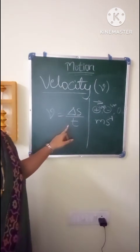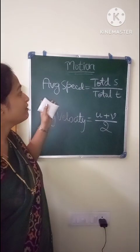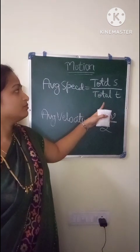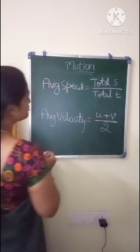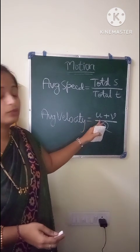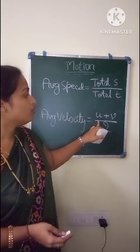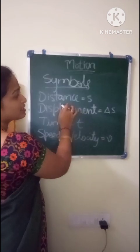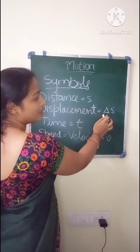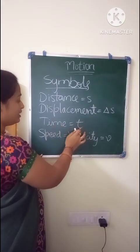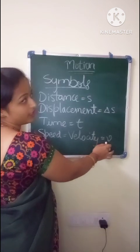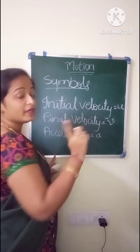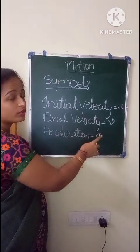Average speed equals total distance covered divided by total time. Average velocity equals initial velocity plus final velocity, the whole divided by 2. The important symbols are: distance — small s; displacement — delta small s; time — small t; speed and velocity — v; initial velocity — small u; final velocity — small v; acceleration — small a.